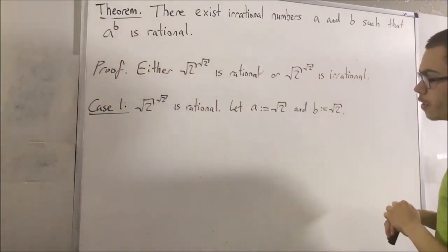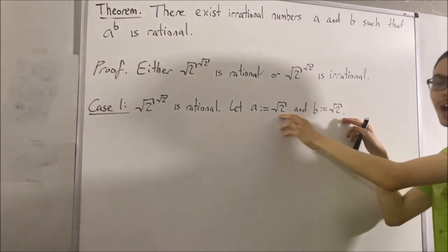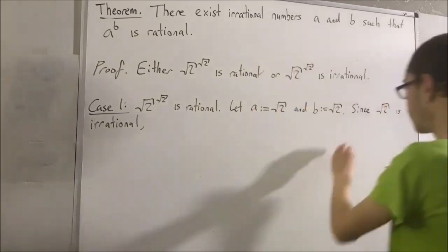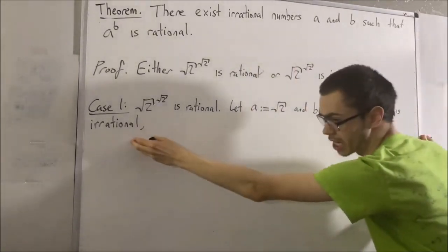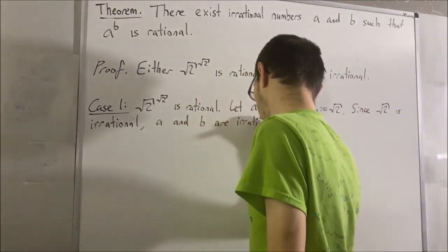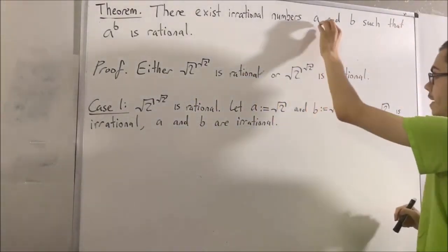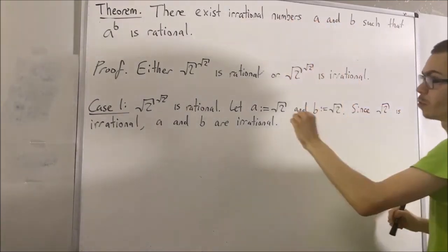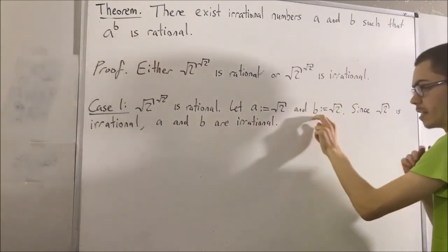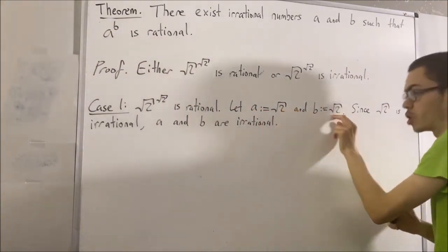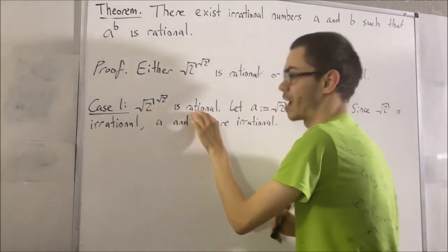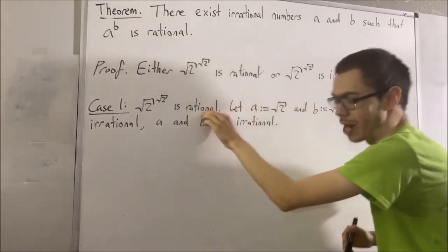Now to start, if you recall, the square root of 2 is irrational. And since the square root of 2 is irrational, this means a and b are irrational. So we've shown that a and b are irrational. Now I want to show that a to the power of b is rational. Well, a to the power of b is equal to square root of 2 to the power of square root of 2. And square root of 2 to the power of square root of 2 is rational. So a to the power of b is rational.